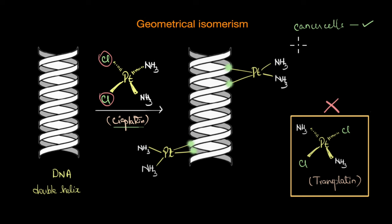But again, we won't go into the details of the mechanism of the drug action here. What we need to see is how cisplatin is able to selectively target and destroy the cancer cells whereas the transplatin cannot. And once again, all of this boils down to the arrangement of the ligands in cis versus trans forms.